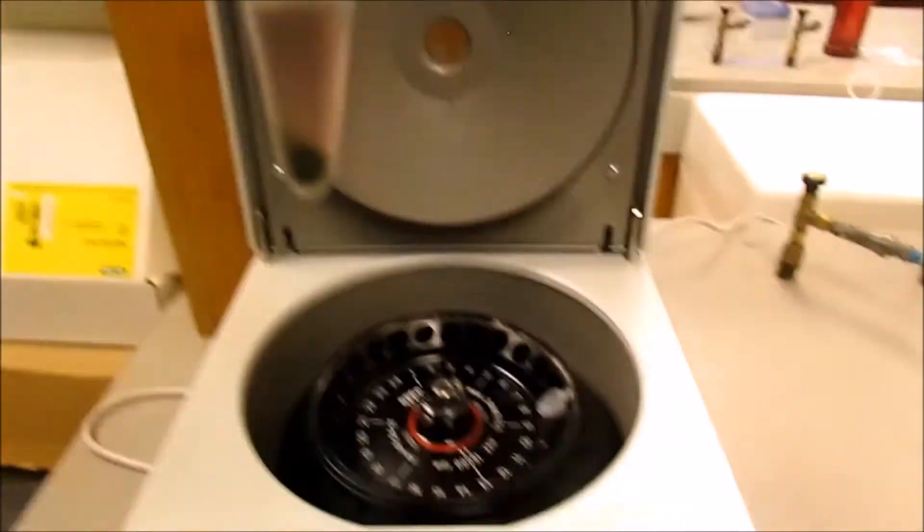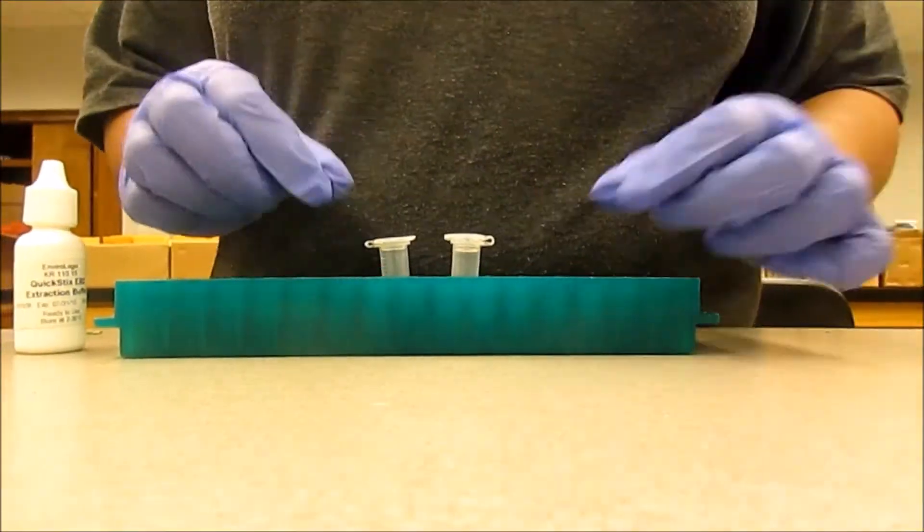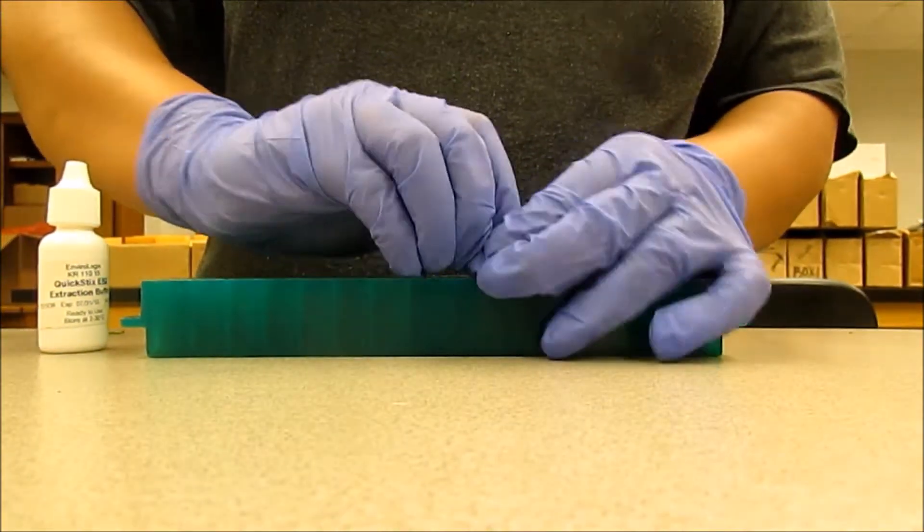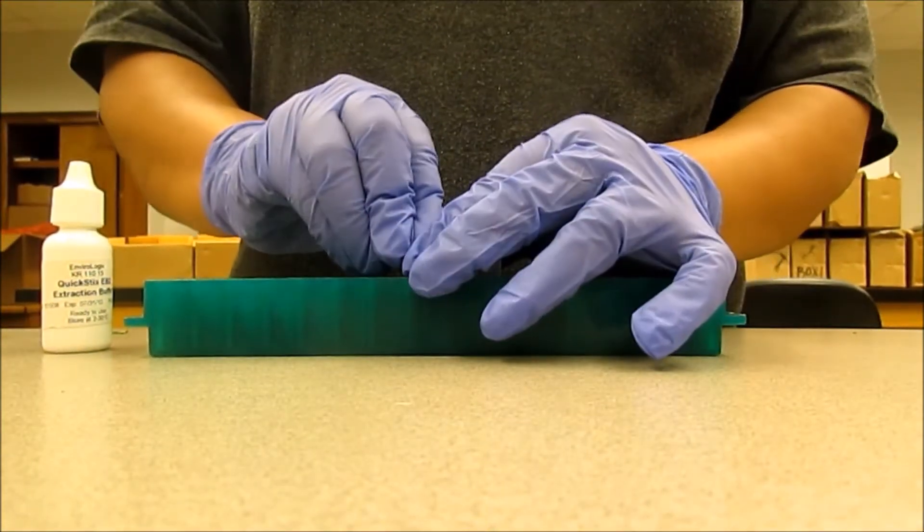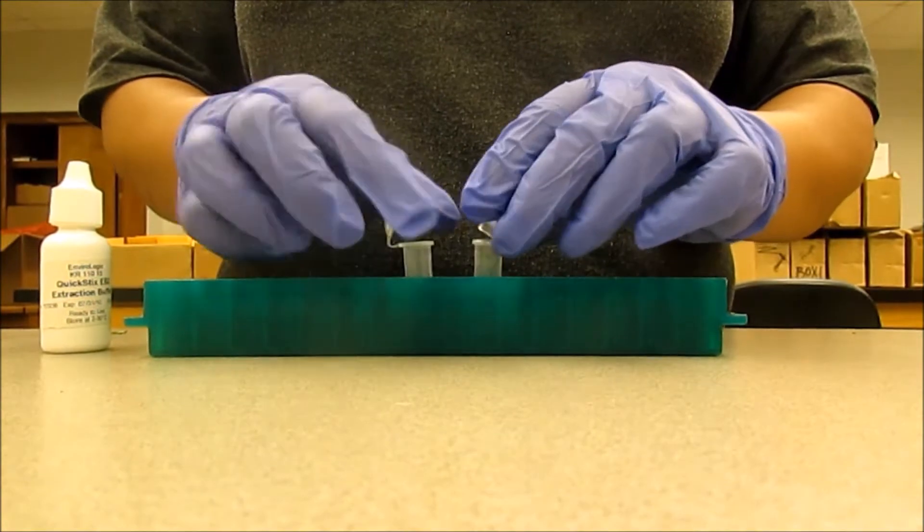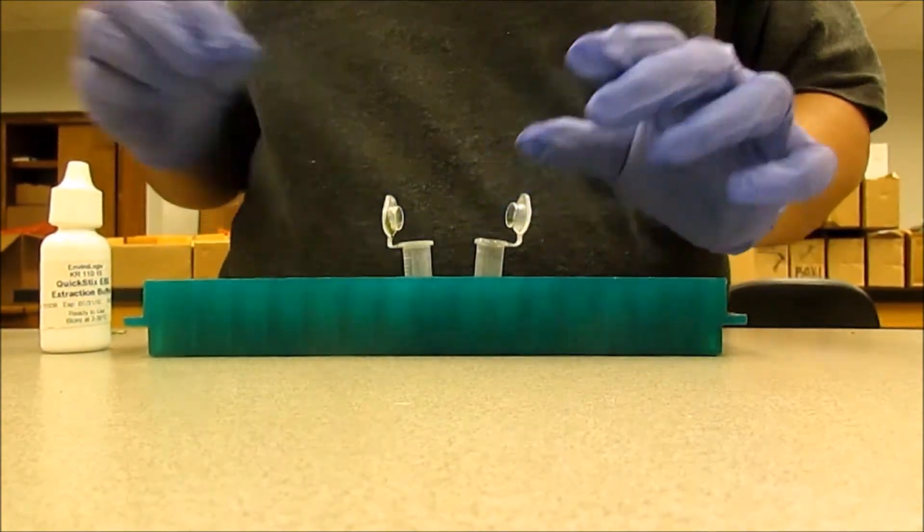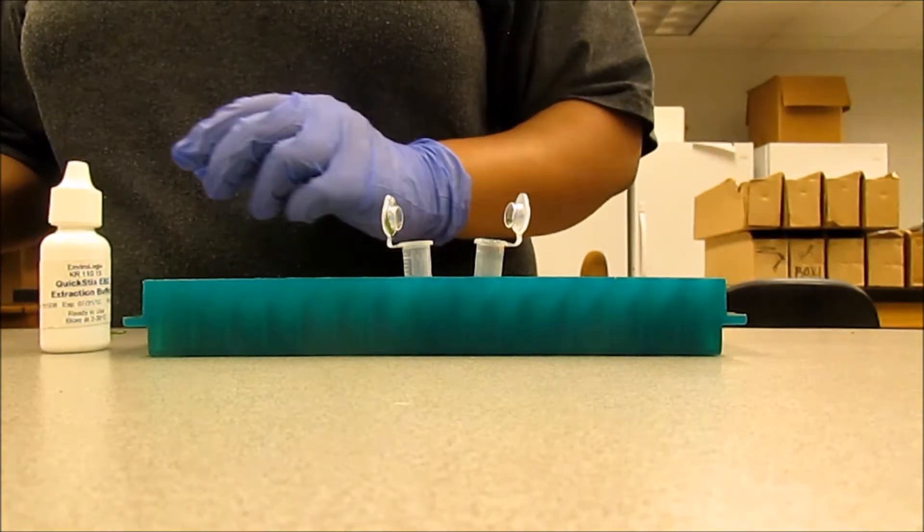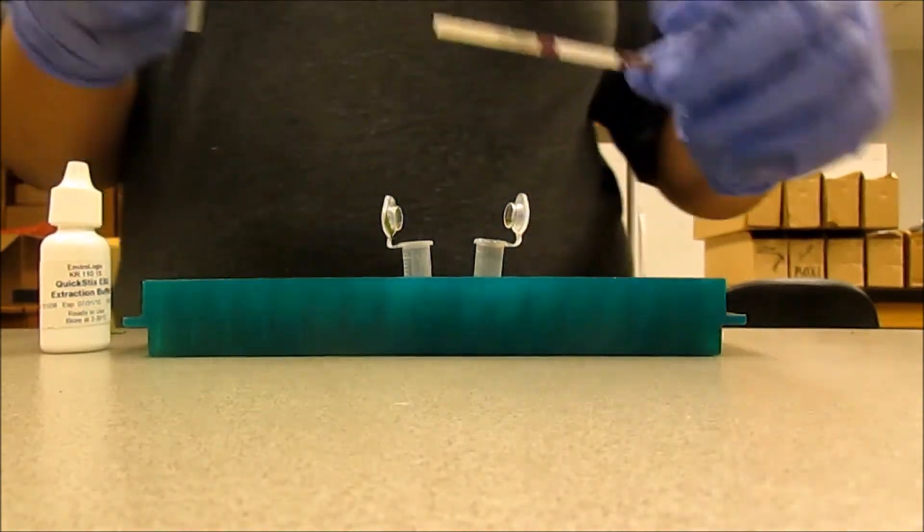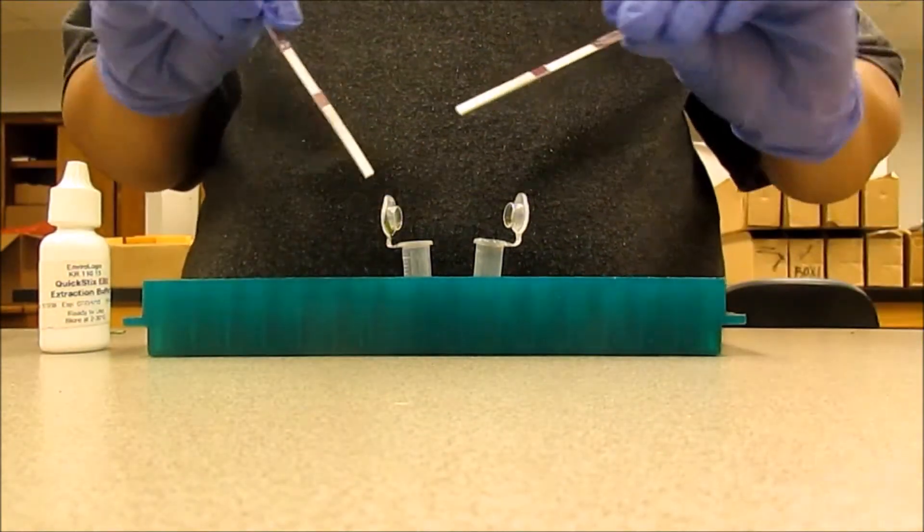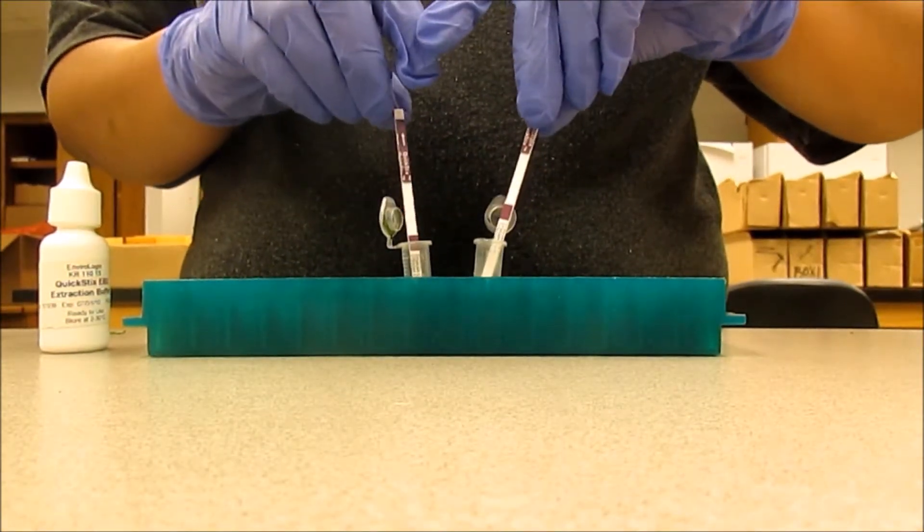After centrifuging, we can see that the debris has settled down nicely. Now we open our tubes. The last thing to do is to just place the testing strips into the samples.